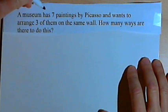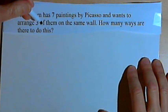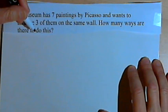A museum has seven paintings by Picasso and wants to arrange three of them on the same wall. How many ways are there to do this?